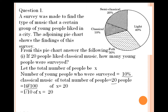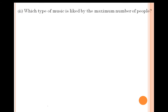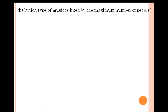The zeros cancel, leaving 1 upon 10 of X equals 20. When the 10 changes sides it becomes multiplication, so X equals 20 into 10, which is 200. So 200 people were surveyed. The next question: which type of music is liked by the maximum number of people? Light music is liked by the maximum number of people — 40%.